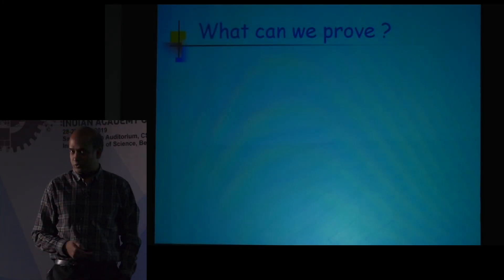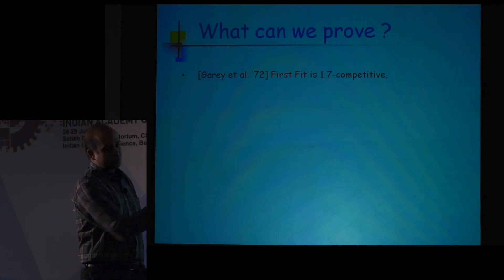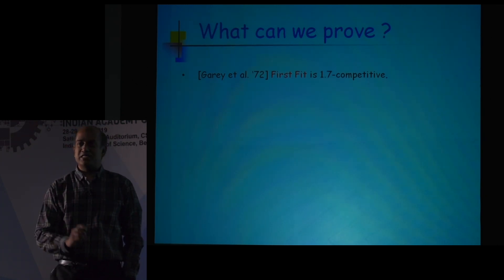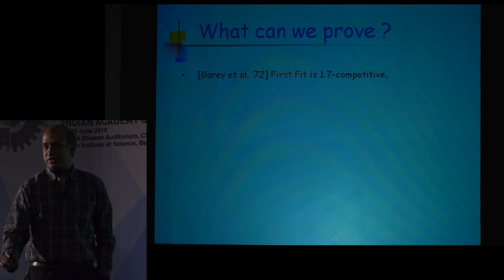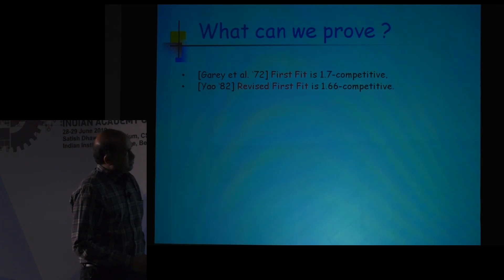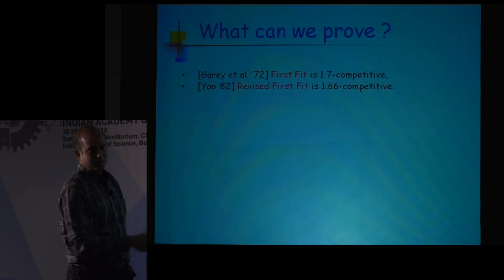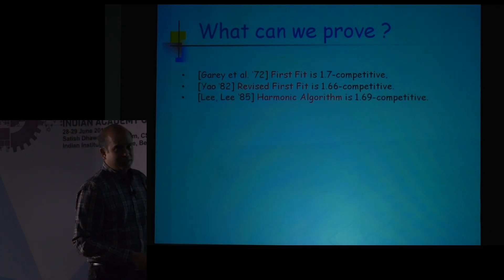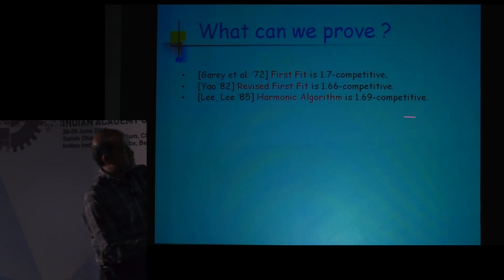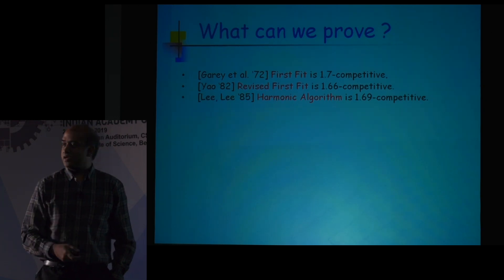Given this background, what can we prove? In the 1970s it was shown that the first fit algorithm is 1.7-competitive, which means you are paying 70% more than somebody who knew the entire future. Then more complex versions came: 1.66, and then something called the harmonic algorithm which is very widely used at 1.69. Each of these improvements required many new ideas.